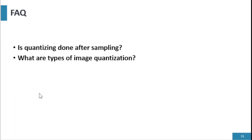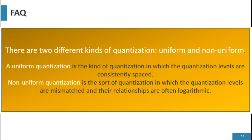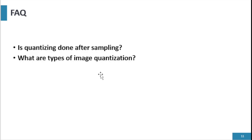Image quantization has two types: uniform and non-uniform. Uniform quantization is a kind of quantization in which the quantization levels are consistently spaced — they have consistent intervals. Non-uniform quantization is a sort of quantization in which the quantization levels are unevenly spaced and their relationship is often logarithmic — they are not uniform. So uniform and non-uniform quantization are the two types of image quantization.